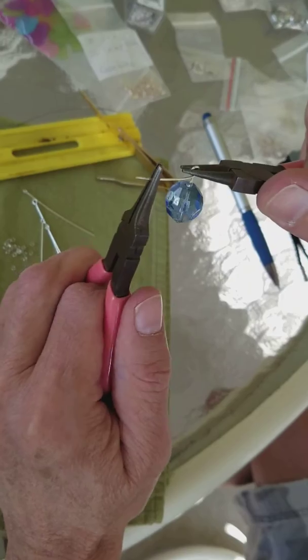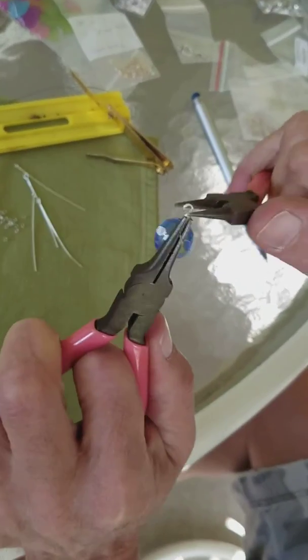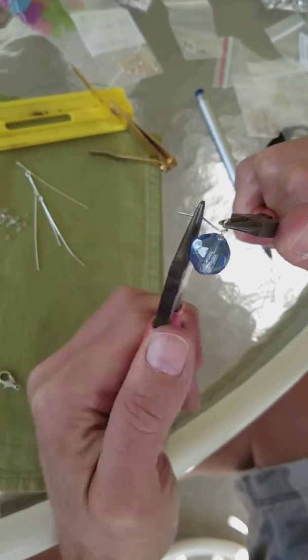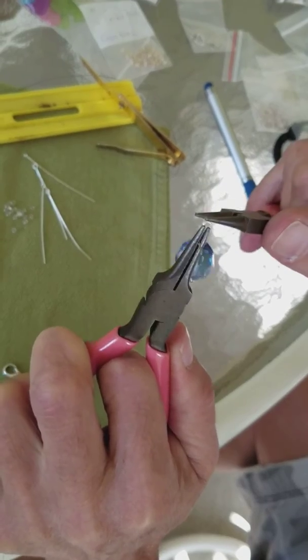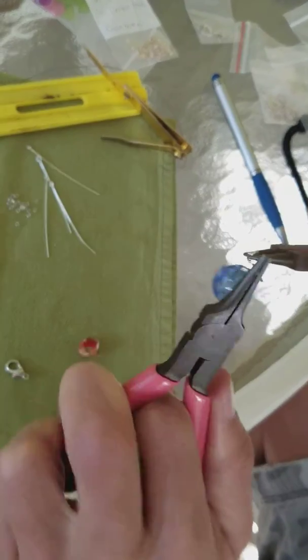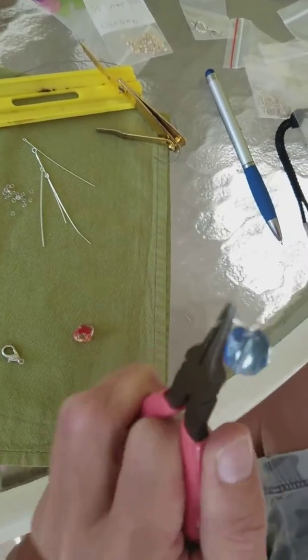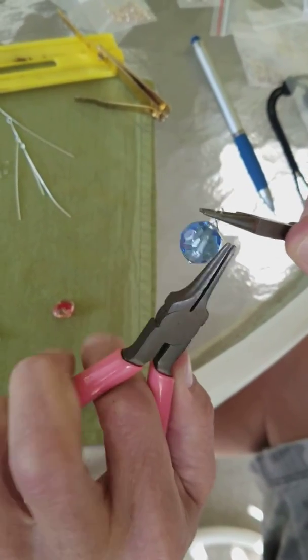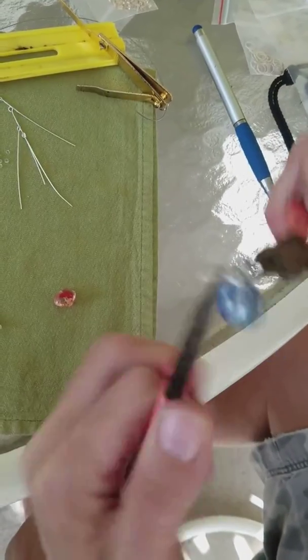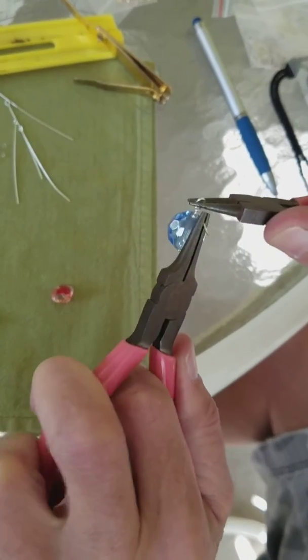Take your flat nose pliers and start wire wrapping around. All the way down, keep your coils nice and tight. Don't do what I'm doing. Just keep wrapping and keep wrapping.